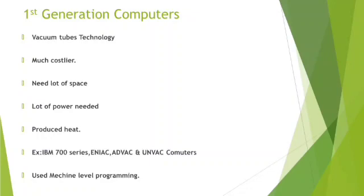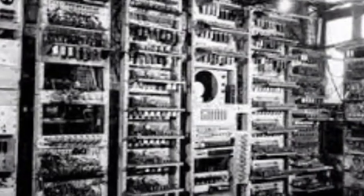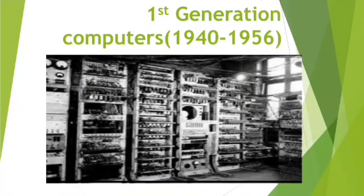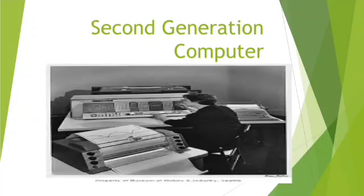Some examples of first generation computers are the IBM 700 series, ENIAC — which stands for Electronic Numerical Integrator And Computer — EDVAC, which stands for Electronic Discrete Variable Automatic Computer, and UNIVAC, which stands for Universal Automatic Computer. These computers used machine language for programming. Machine language is the only language a machine can understand directly.